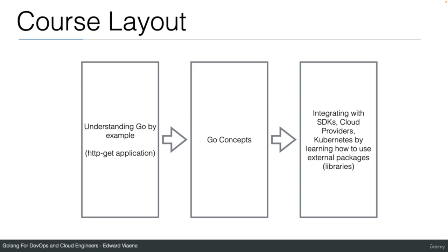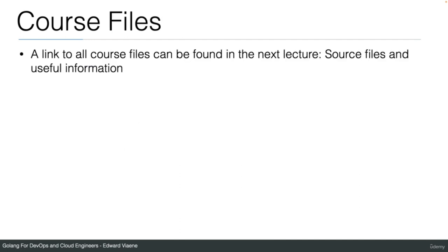This is the course layout. We will start by understanding Go by example — I will show you the HTTP GET application as our first application. Then we will continue with Go concepts, explaining the main concepts using examples. Then we're going to start integrating with SDKs, cloud providers, and Kubernetes by learning how to use external packages. I will write all the Go programs myself in the lectures and demos. A link to all course files can be found in the next lecture, called the source files and useful information. Make sure you know where my GitHub repository is, because that's where all the Go source files are located.